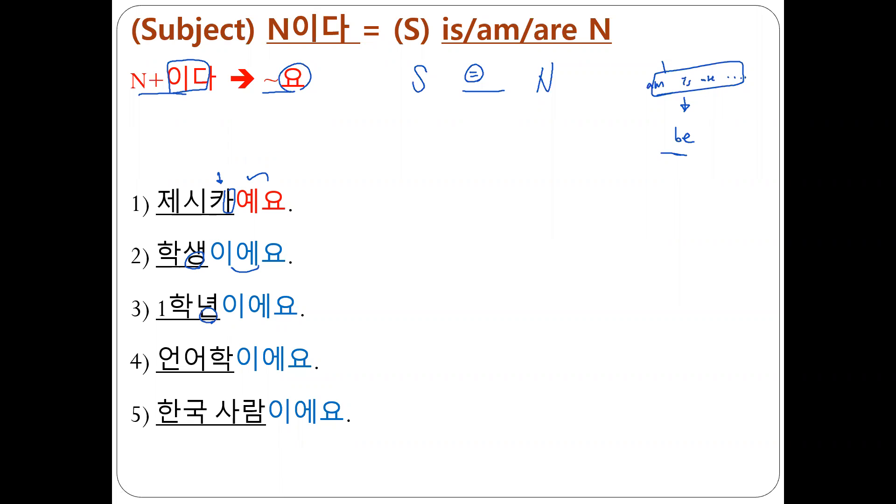When the nouns, last syllable ends with the consonant, then we add 이에요. When the nouns, last syllable ends, last syllable ends with the vowel word, then we add 예요. Okay?